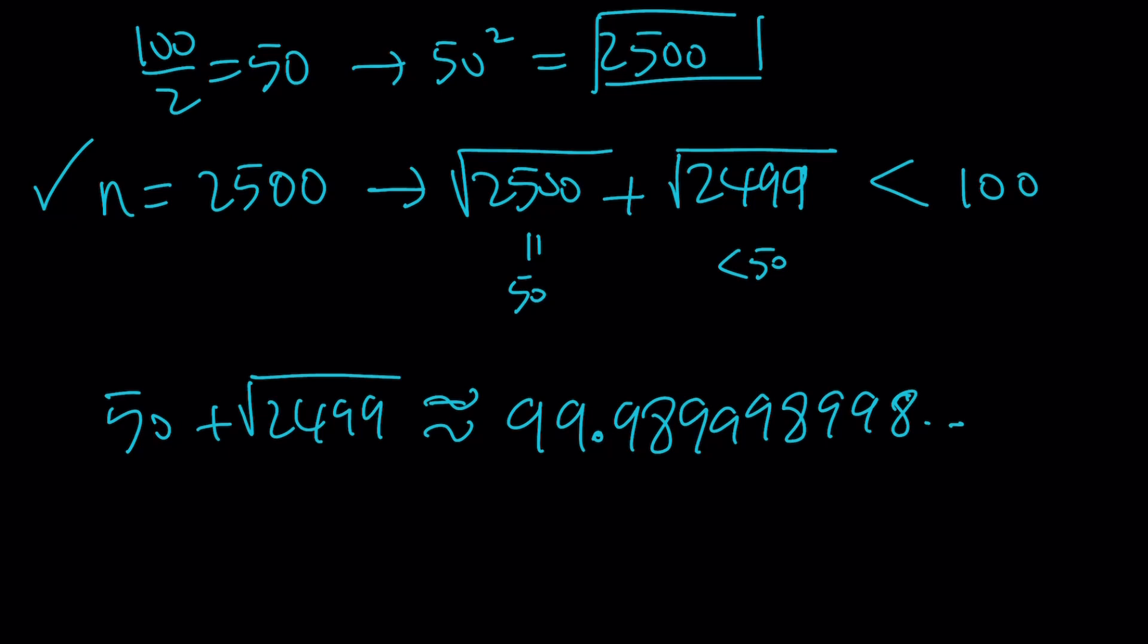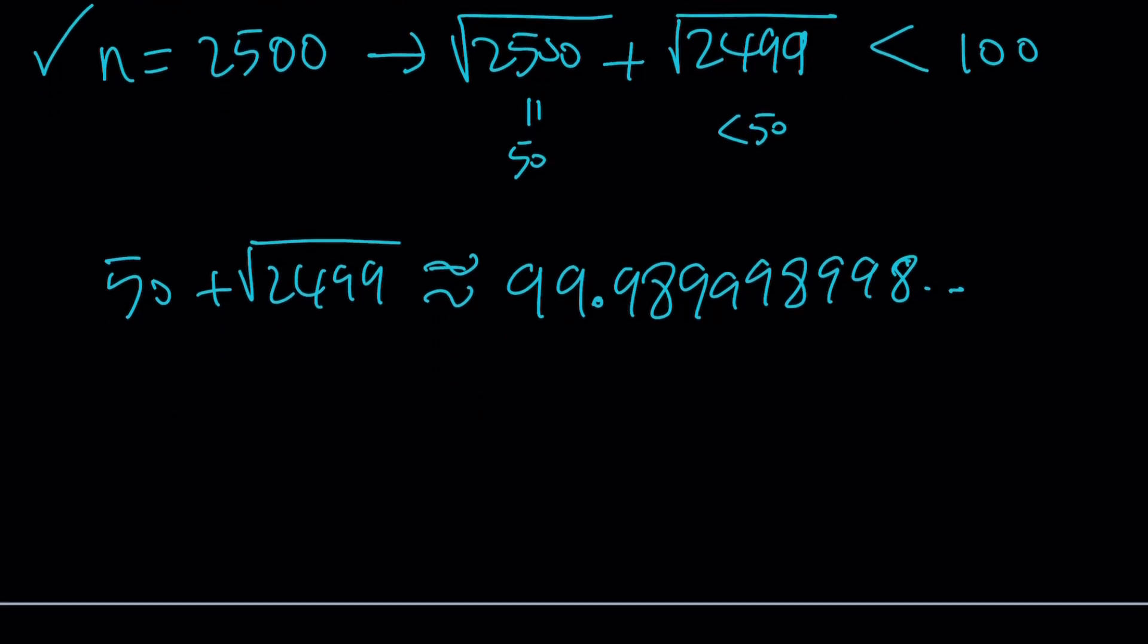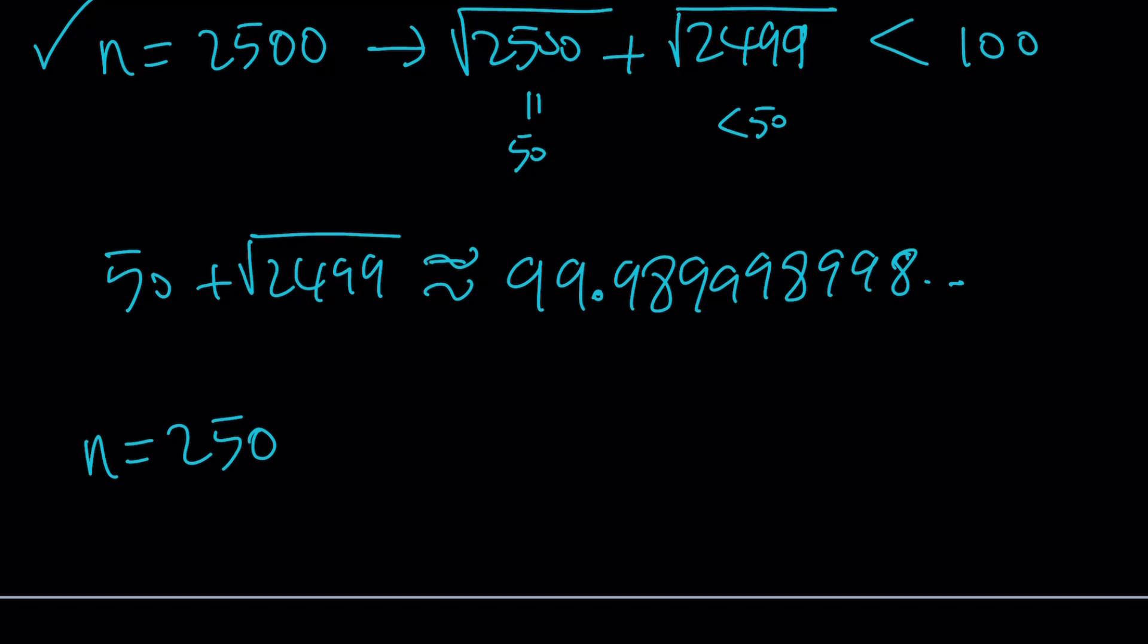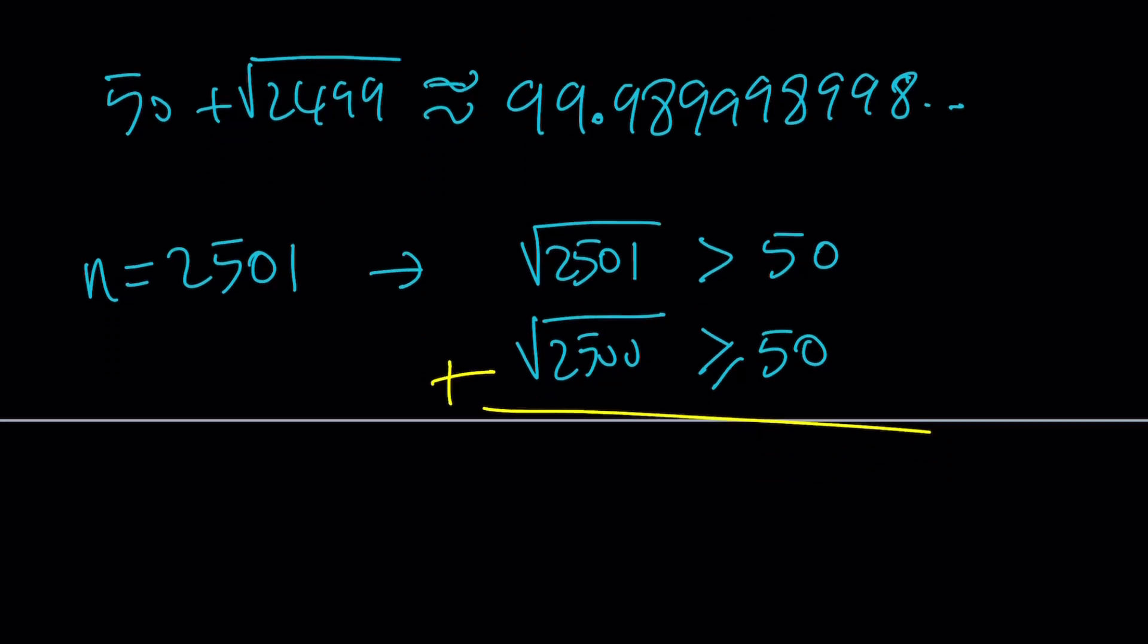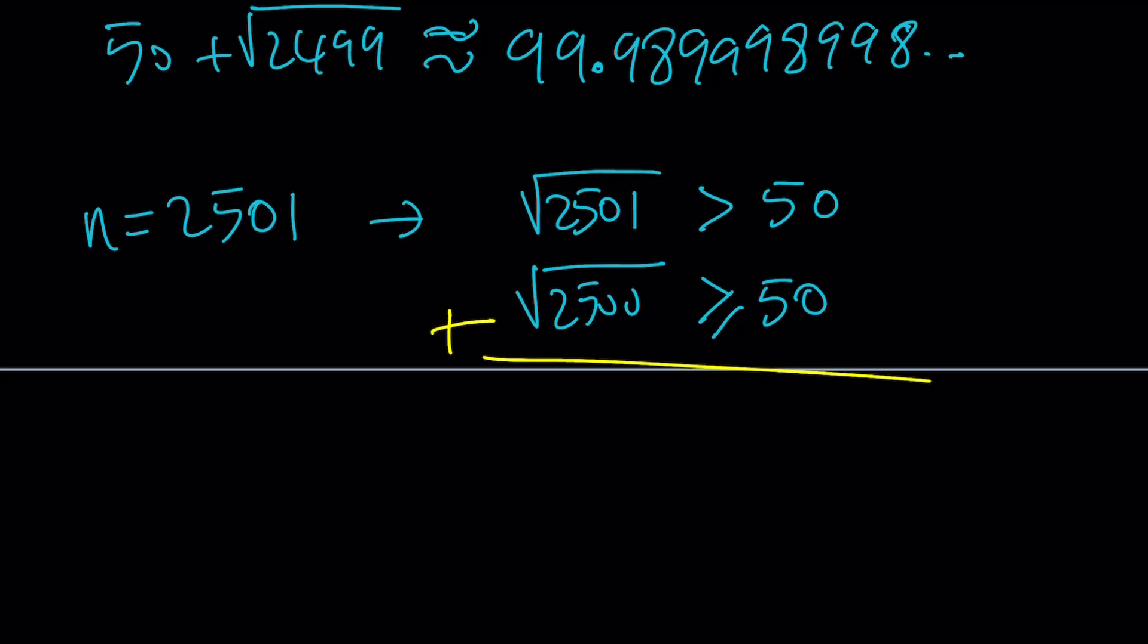So what happens if we increase n a tiny bit? Because smaller n is not going to work for sure. What if n is equal to 2,501? Then in that case, square root of 2,501 is definitely greater than 50 because 2,501 is greater than 2,500. And the square root of 2,500 is equal to 50, but I can write it as greater than or equal to 50. That's kind of weird, because I want to get two inequalities that I can add. And when I add, of course, I kind of have to go with the stricter case because the sum cannot be 100 for sure. So this means that the sum here is definitely greater than 100, which is what we wanted.